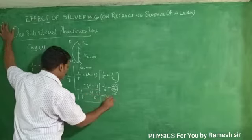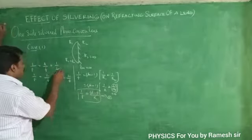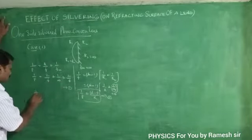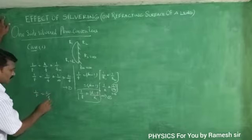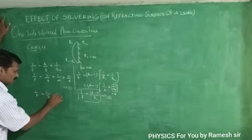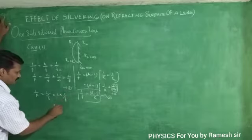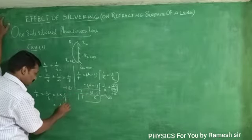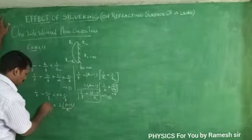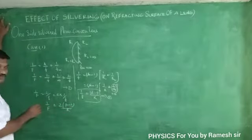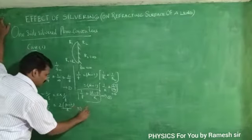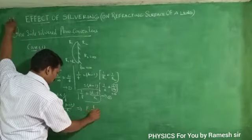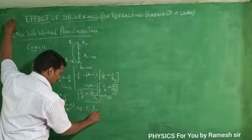This is equation number 2, and equation number 1 gives 1/F = 2/f. Substituting the value of 1/f, we get 1/F = 2(μ - 1)/r. Taking the reciprocal of both sides, the effective focal length F is equal to r / [2(μ - 1)].